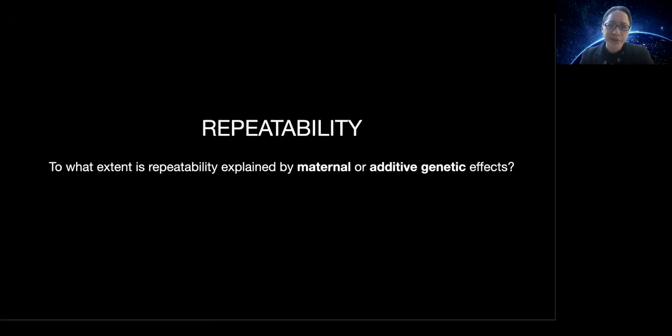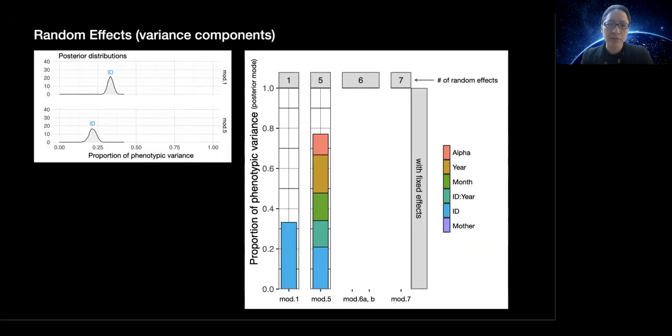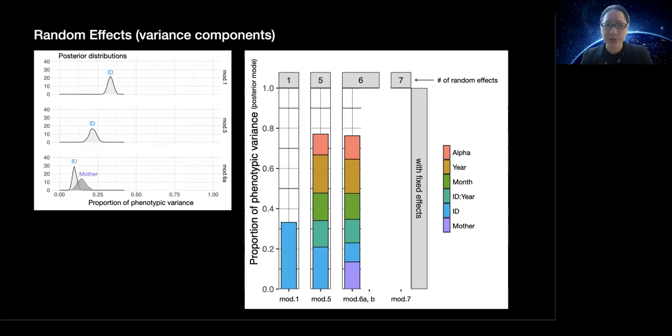So can we further understand what is contributing to the moderate repeatability that we see? To what extent might the repeatability be explained by maternal or additive genetic effects? Let's return to our models. What happens when we add the identity of subjects' mothers to our model? We see that much of the repeatability appears explained by maternal effects, or in other words, by similarity between maternal siblings.